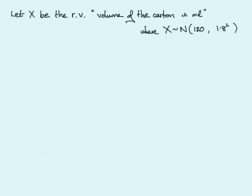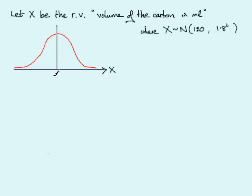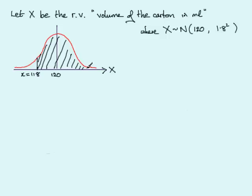Next, what I always do is draw a sketch of the distribution. We have the normal distribution with random variable X, and along this axis we have the range of values of the volume. The central value is the mean of 120 milliliters. We're looking for the probability of being more than 118 milliliters, so 118 is somewhere around this area — that's an observed value, so we use a small letter x. The probability of being more than 118 is represented by the area to the right of 118, shaded in.